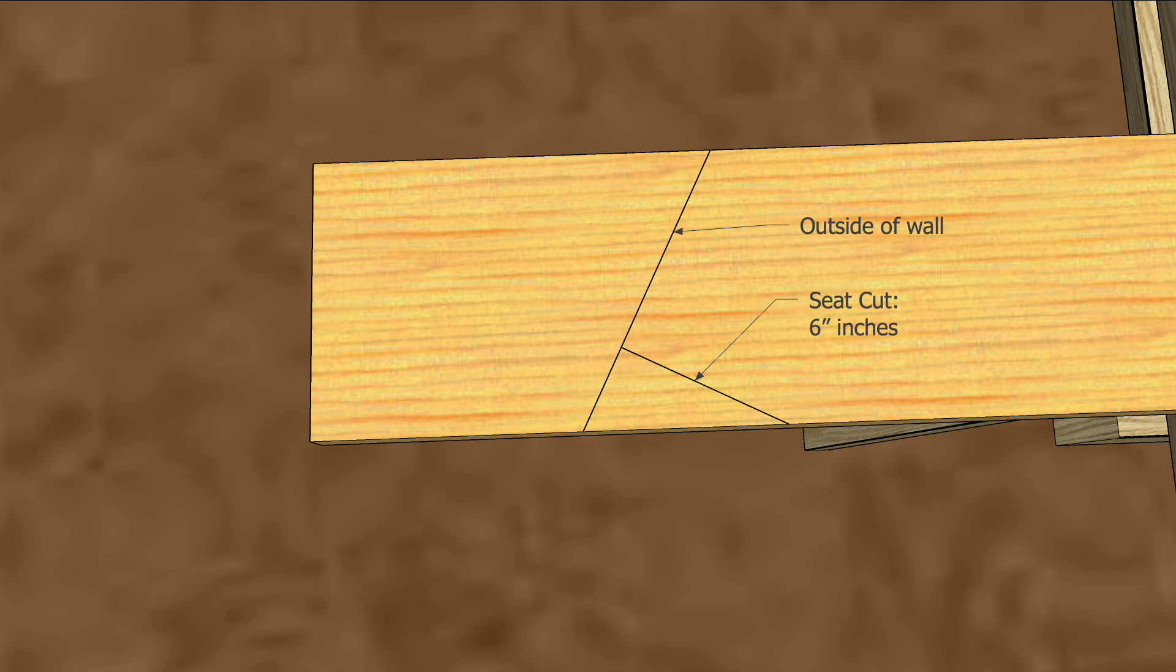So this is going to be an 8 inch overhang, but there's an inch and a half of sub fascia, so mark 6 and a half inches past the plumb cut and then make another plumb cut there. That's the overall length of the rafter.